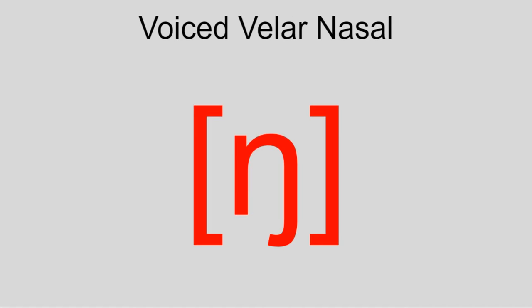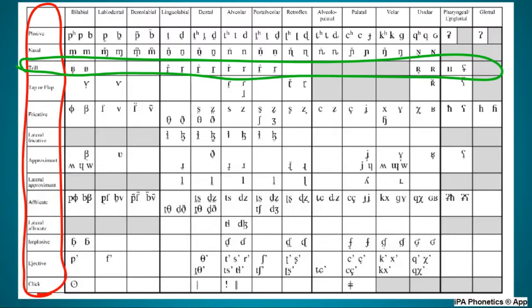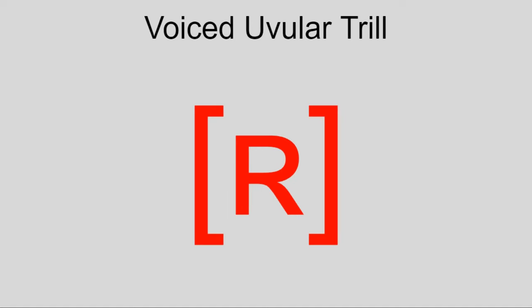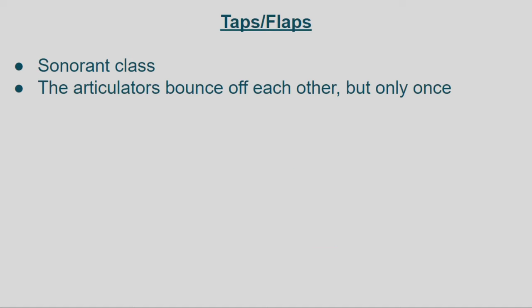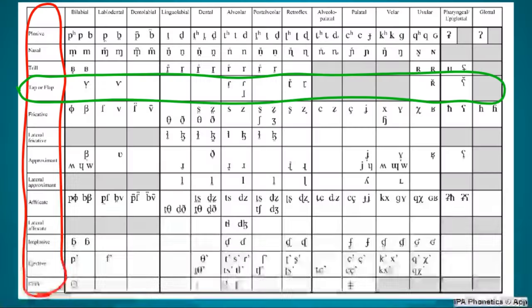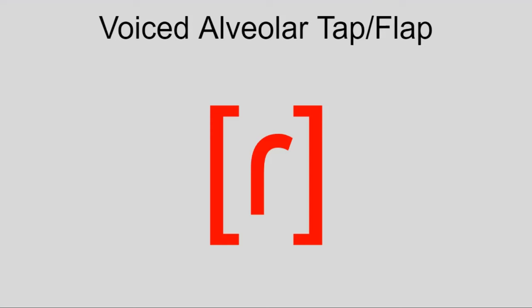After that we have trills, which are sonorants — exactly what they sound like, except more like drum rolls than flute trills. The most common one by far is the alveolar trill, but there's also the uvular trill and bilabial trill. The next manner is what would happen if you did a trill only once: a tap or flap. The only one commonly heard in real life is the alveolar tap.